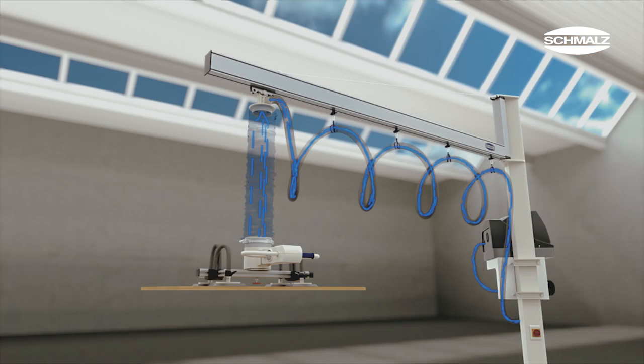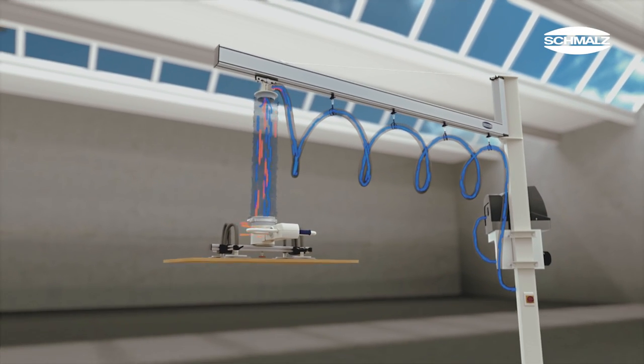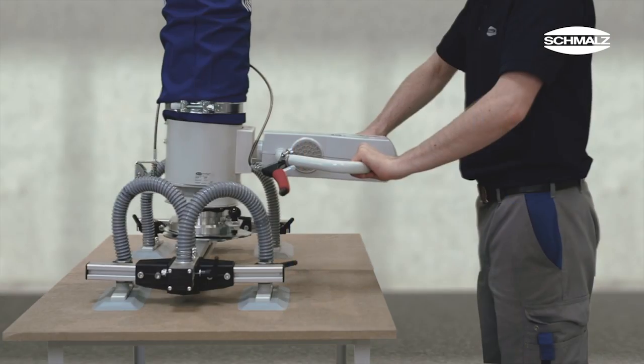When twisting the grip in the opposite direction, air is introduced and weakens the vacuum. The load can be set down carefully and precisely.